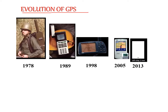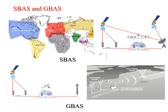GPS has evolved significantly since it started. The very first satellite was launched in 1978, and soldiers used to carry a very heavy receiver with a large antenna. By 1989 the size was reduced, and in 1998 it became more compact. In 2005 there was another revolution, and from 2003 onwards we can see a tiny chip of about 2 mm which is now installed in smartphones.